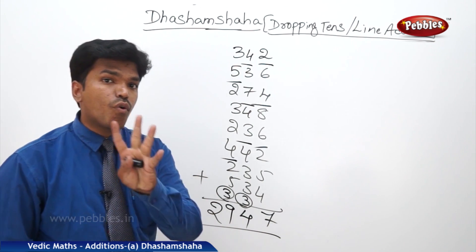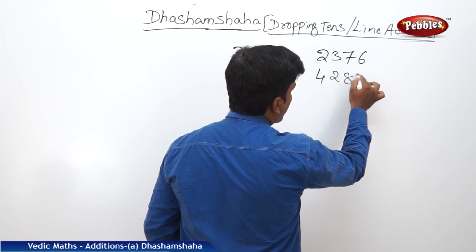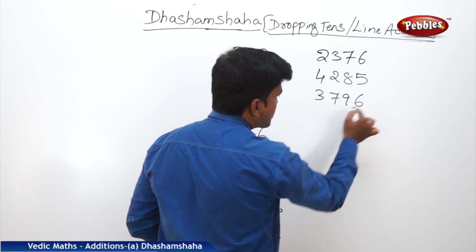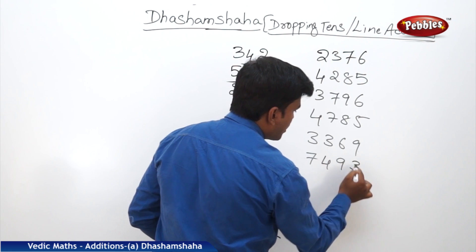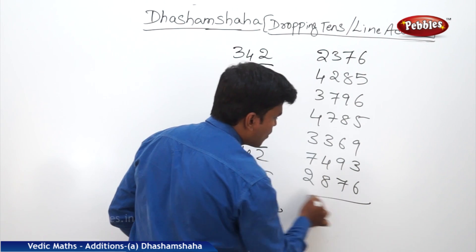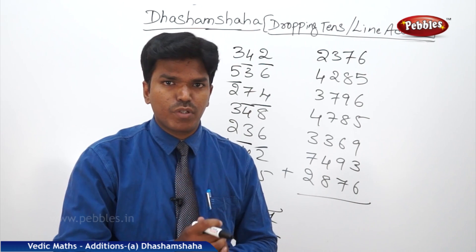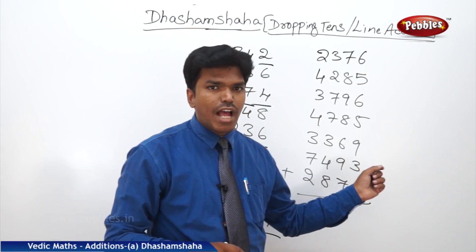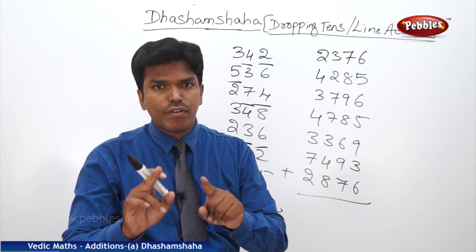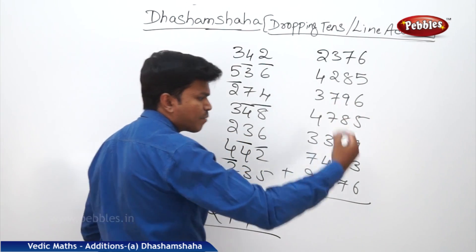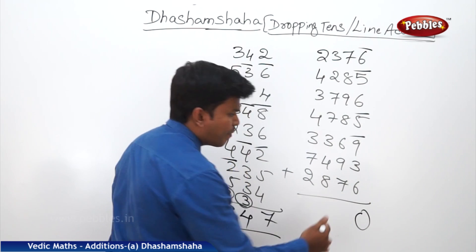Similarly, let us take a 4-digit example. The numbers are: 2376, 4285, 3796, 4785, 3369, 7493, 2876. Now let us add. This time I will go a little fast — you need to follow. Remember: I will say only the remaining ones after dropping 10. Start from the rightmost rank. 6, 3, 9, 9, 8, 8, 5, 3, 6, 9, 9, 5, 4, 4, 6, 0. How many 10s? 4 tens. Immediately carry 4 here.